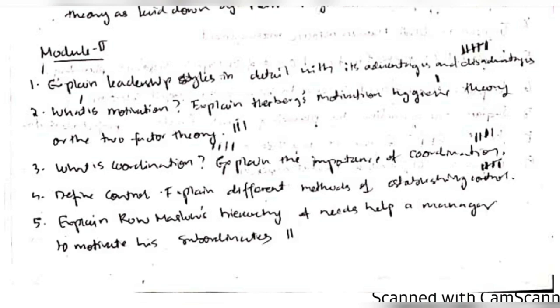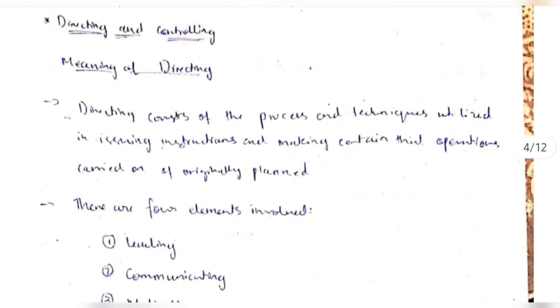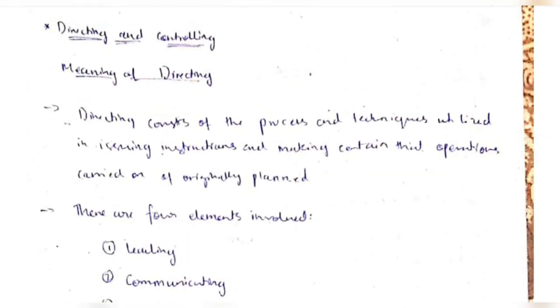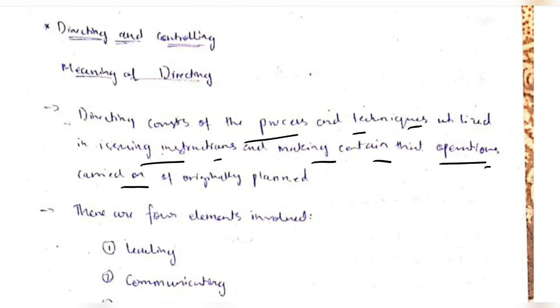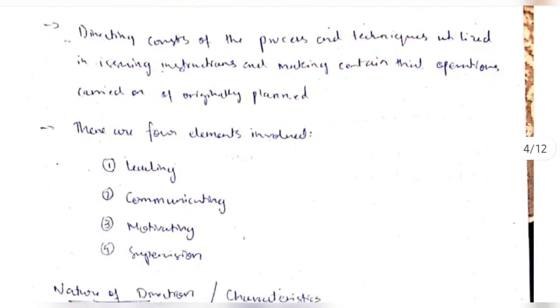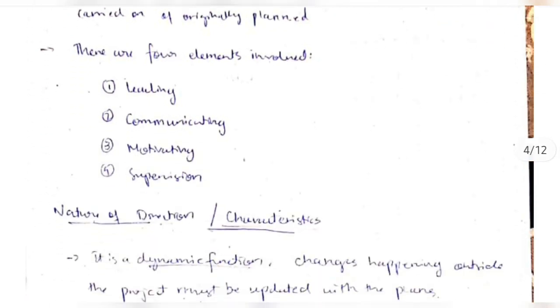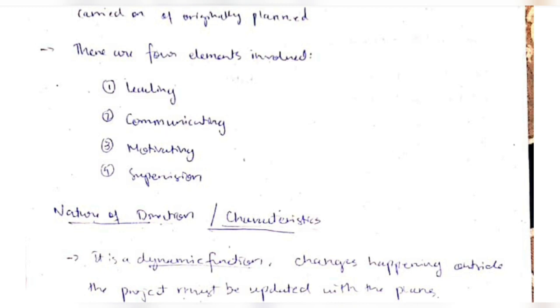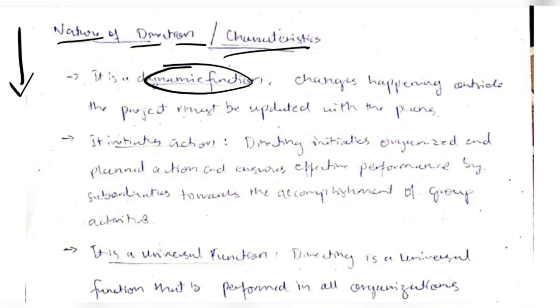Let's start with directing. We all have a brief idea about what directing is — it is the process and technique to issue instructions and make a project get completed on time. The elements involved in directing include leading, communicating, motivating, and supervision.